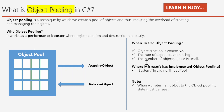Number three: when the number of objects in use is small. If the number of objects being used is less than the in-hand objects in the pool, meaning objects are available to serve, then object pooling is a good choice. One example where Microsoft used the object pooling concept is System.Threading.ThreadPool, where they have implemented this concept.